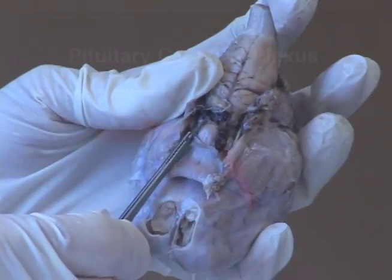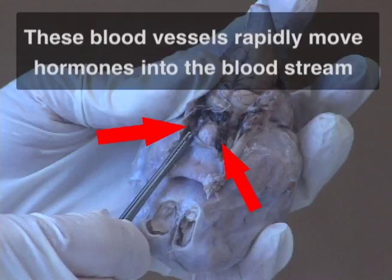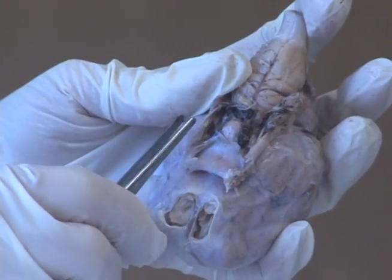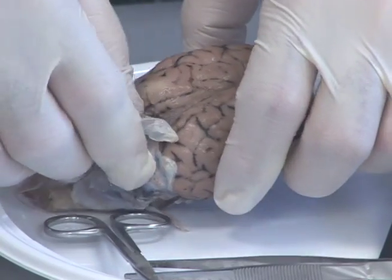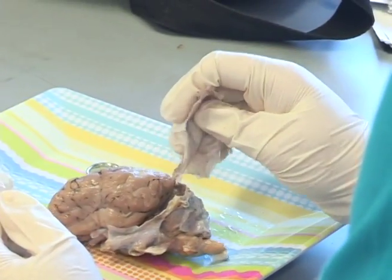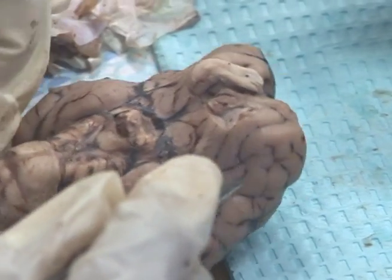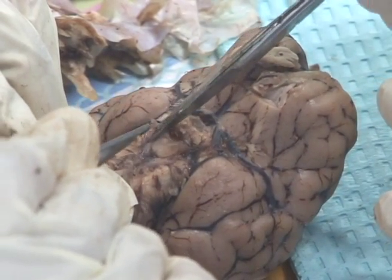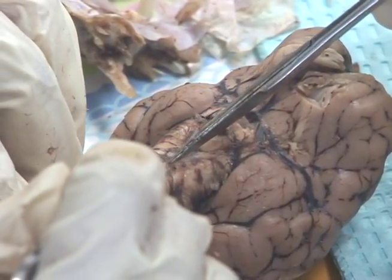That's a gorgeous pituitary. You've got nice trigeminals. Nice optic. Can you find the circle of Willis or any of these blood vessels? Right here and right here — it comes down like that. This is your basilar right here. There's not much blood in it, so it's hard to see.